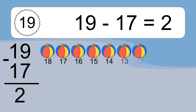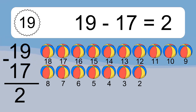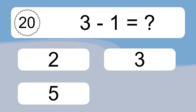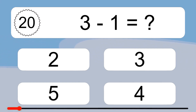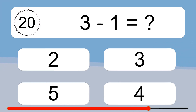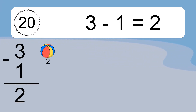19 minus 17 equals what? 19 minus 17 equals 2. Let's count it: 2.